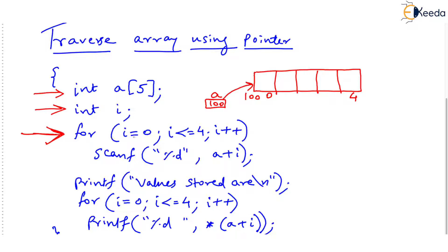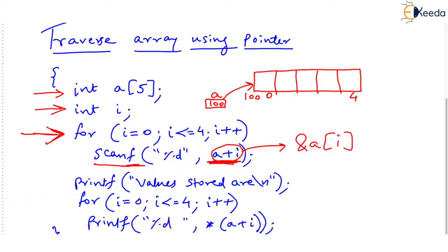If we keep 'i' as zero initially, this scanf will run and the scanf is scanning the value of 'a plus i'. But what is 'a plus i' equivalent to? This 'a plus i' written here is equivalent to '&a[i]'. That means to the scanf, we are giving the address of a[i]. Currently i is zero, so we are giving the address of a[0].